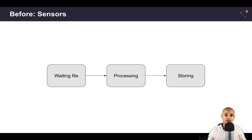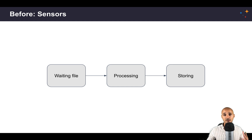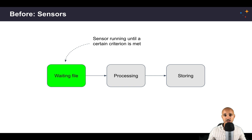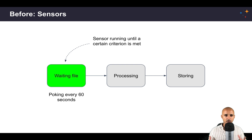Let's imagine we have a data pipeline with three tasks: waiting file, processing, and storing, where waiting file is a sensor waiting for a file to land at a specified location. As soon as you start triggering that DAG, the waiting file sensor will start and wait for that file. A typical sensor checks every 60 seconds by default if the condition is met — in our case, if the file has arrived.